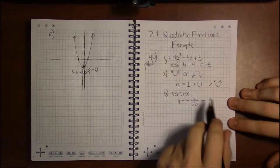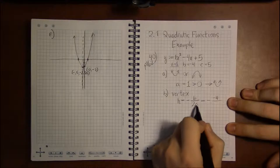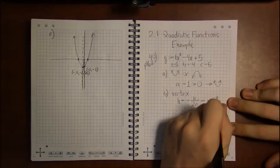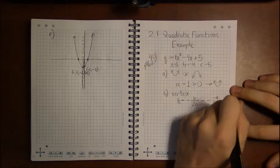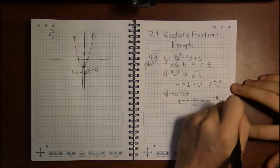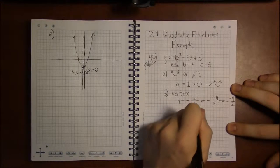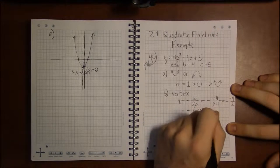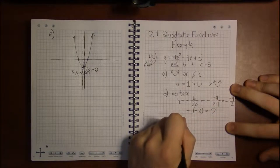So in our case, b is minus 4, a is 1 as we mentioned earlier. So this is minus a minus 4 over 2, or minus a minus 2, which is a long way of saying 2.